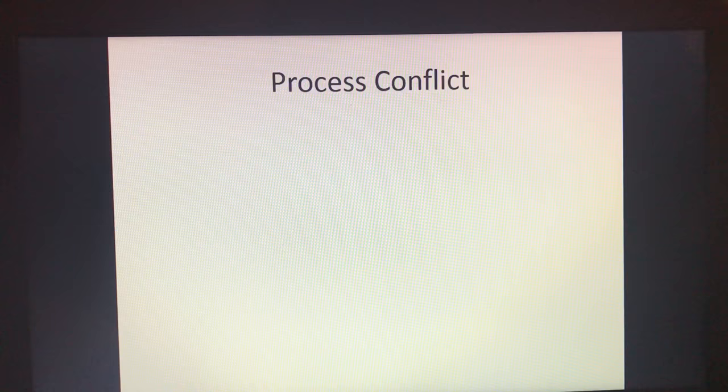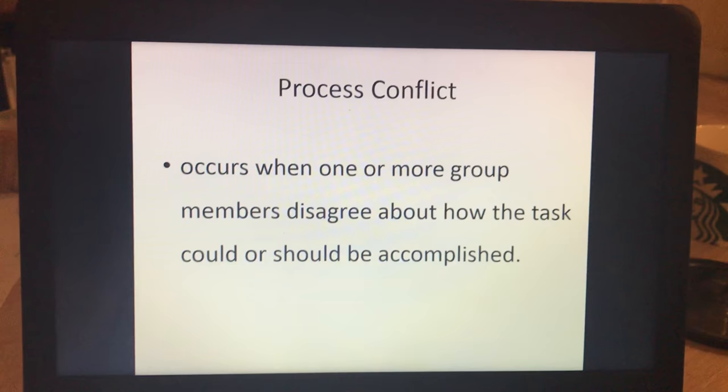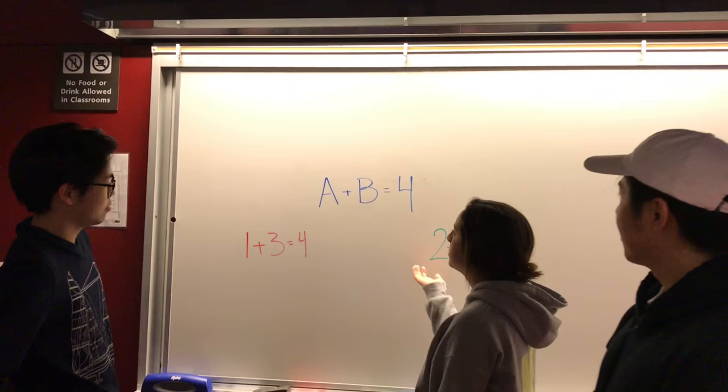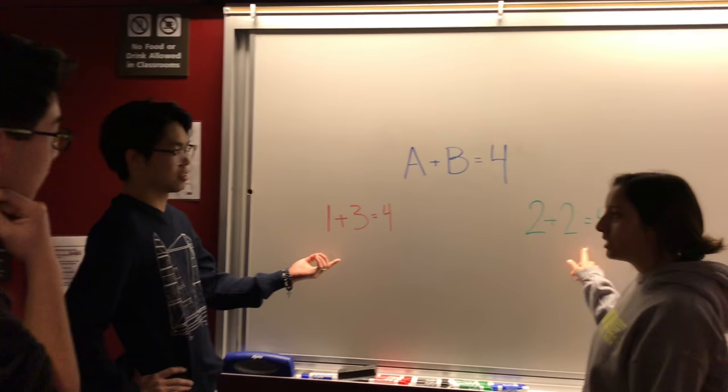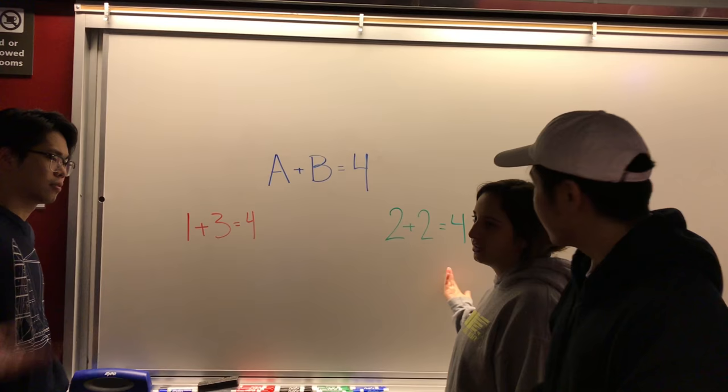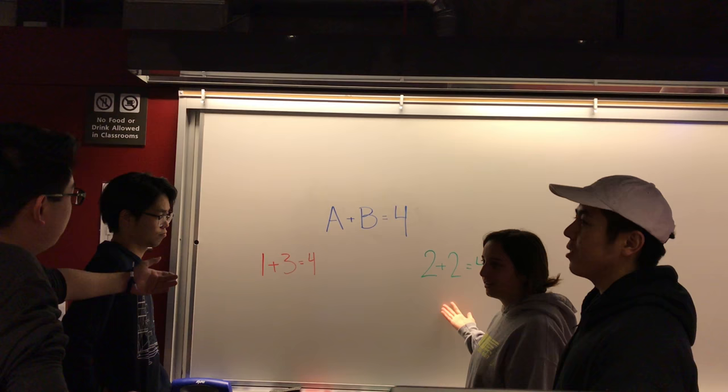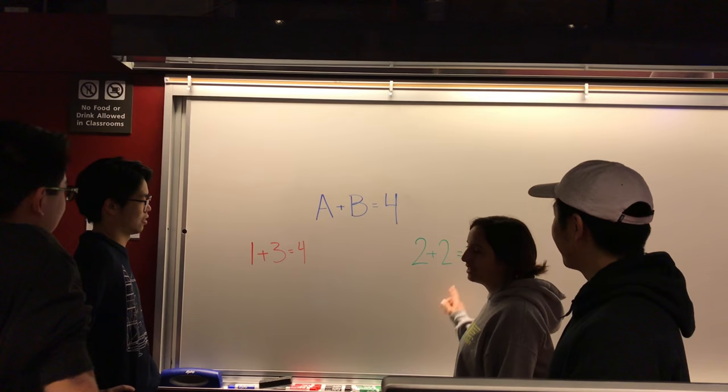Process conflict occurs when one or more group members disagree about how the task could or should be accomplished. I don't know how to go about this math problem — A plus B equals 4. I think it could be 2 plus 2 equals 4, so A is 2, B is 2. But I think A is 1 and B is 3. I like 1 plus 3 better. I think 2 plus 2 is simpler. You're wrong. No, that's not right — it's this way.